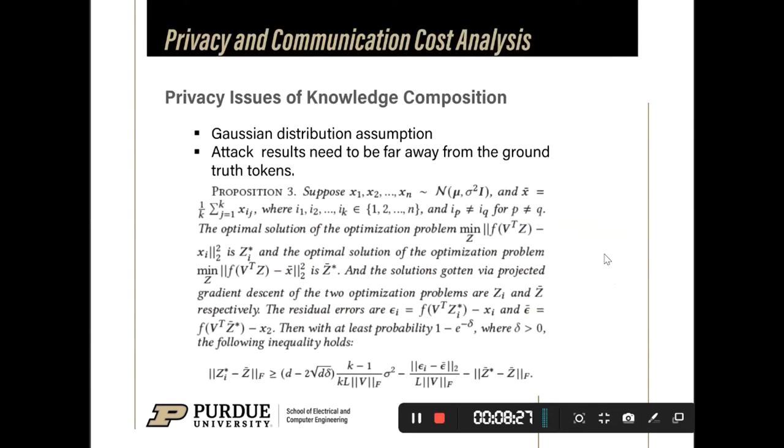For the proposed method FedKC, we can prove that it is difficult to recover raw data from the centroids. The proposition shows that attack results will be far away from the ground truth tokens. And the details about the proof are shown in the appendix of our paper.